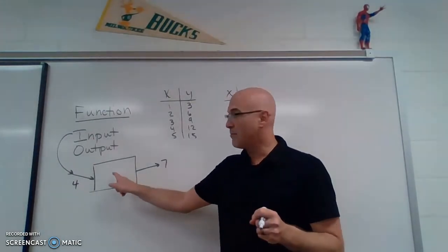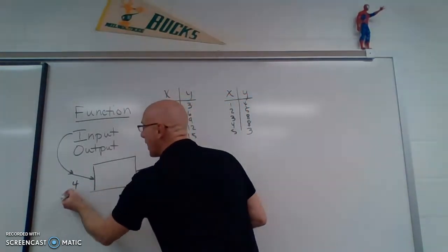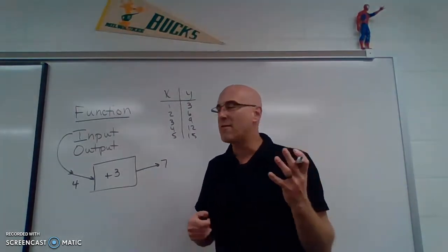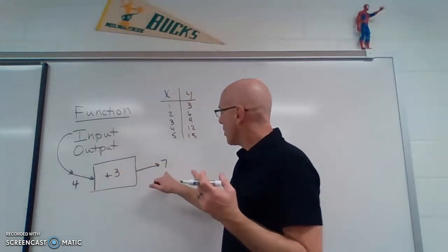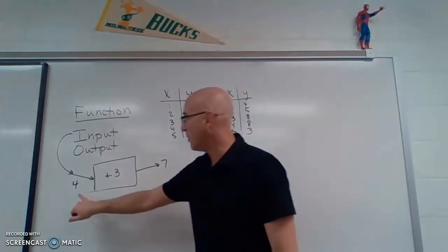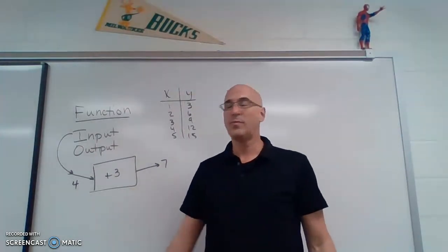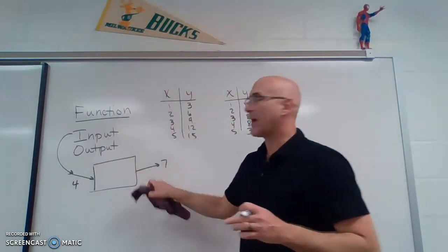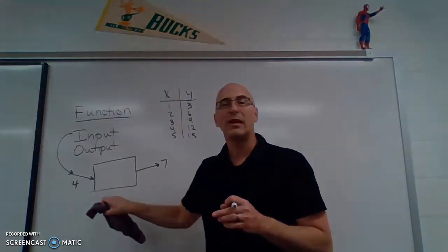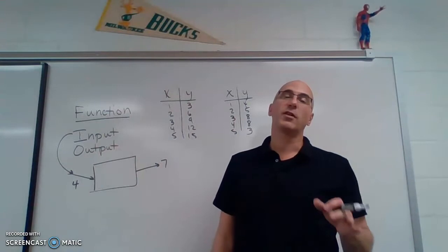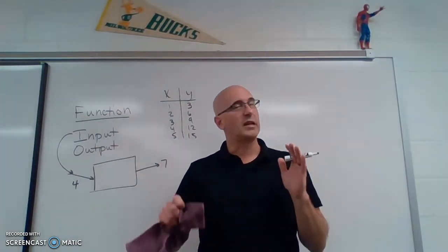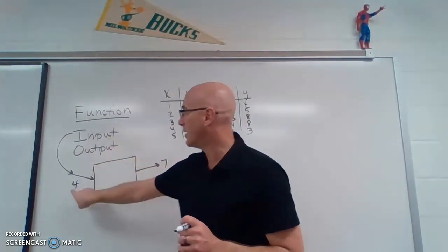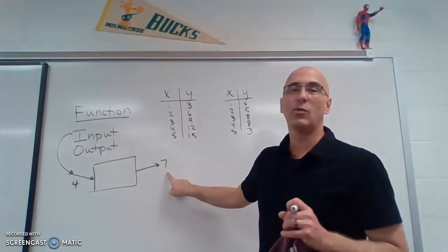Our rule, my machine, might be we take whatever goes in and we are going to add 3. Now the thing about a function is that we have to spit out the same number every time for this number. So say I had, I just didn't know what my rule was. Say I put 4 in and I got 7 out and then I put 4 in and I got 12 out. That's not a function because the rule is not clear. It's going to give you two different outputs. So a function is a rule that takes an input, a number that goes in, and gives me exactly one output.